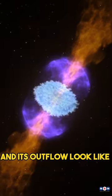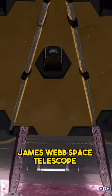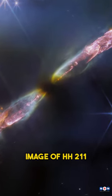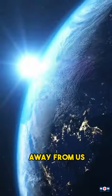Do you want to see how a baby star and its outflow look like in infrared light? Well, you're in luck, because NASA's James Webb Space Telescope has just captured an amazing image of HH-211, a young star that is only 10,000 years old and 1,000 light years away from us.